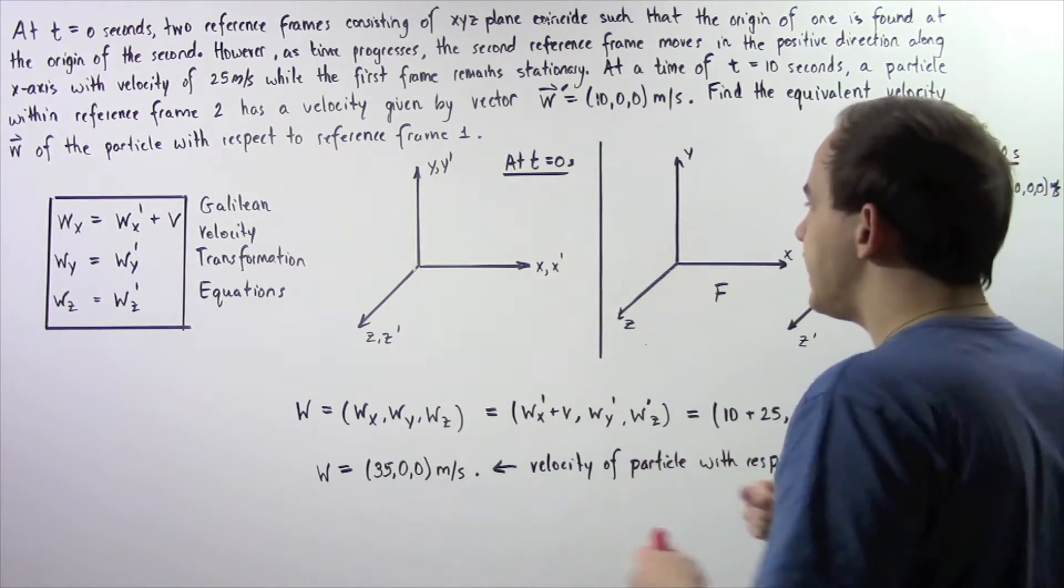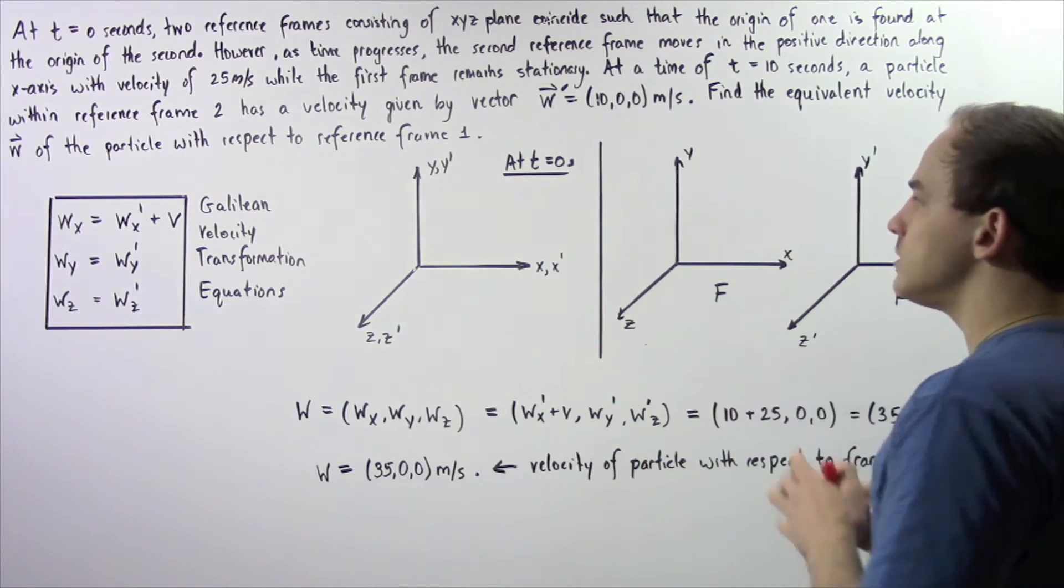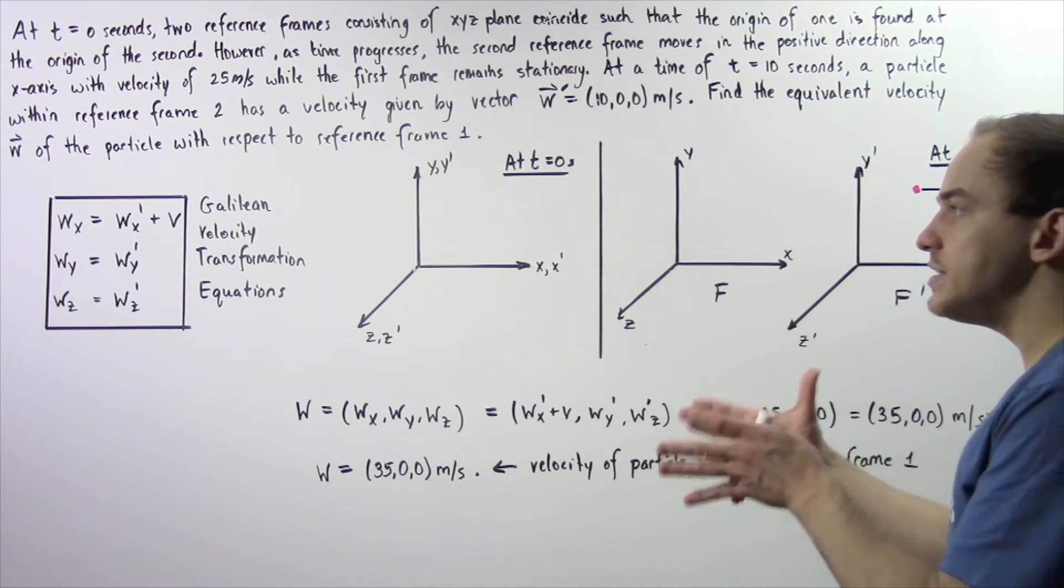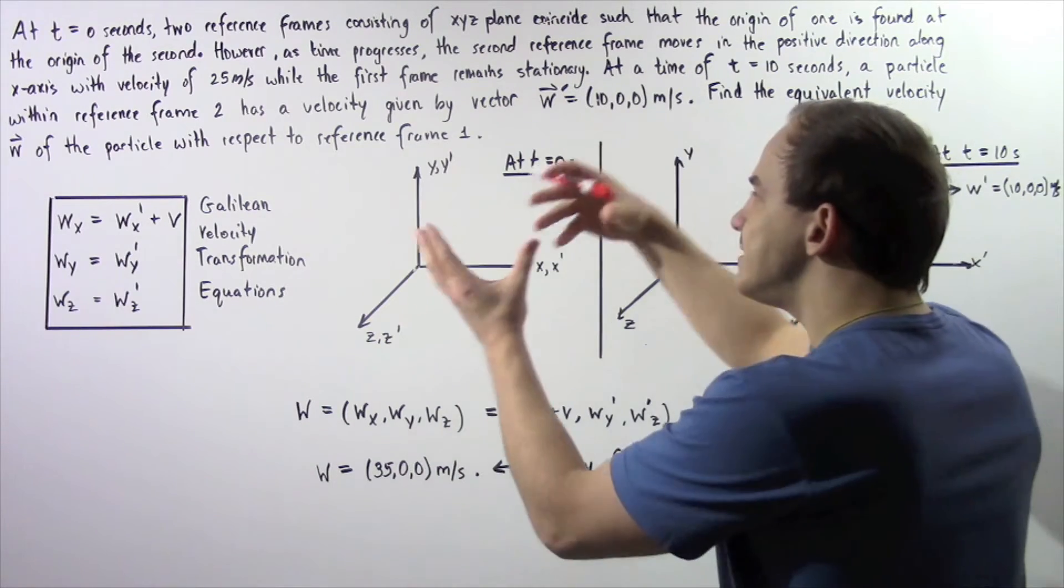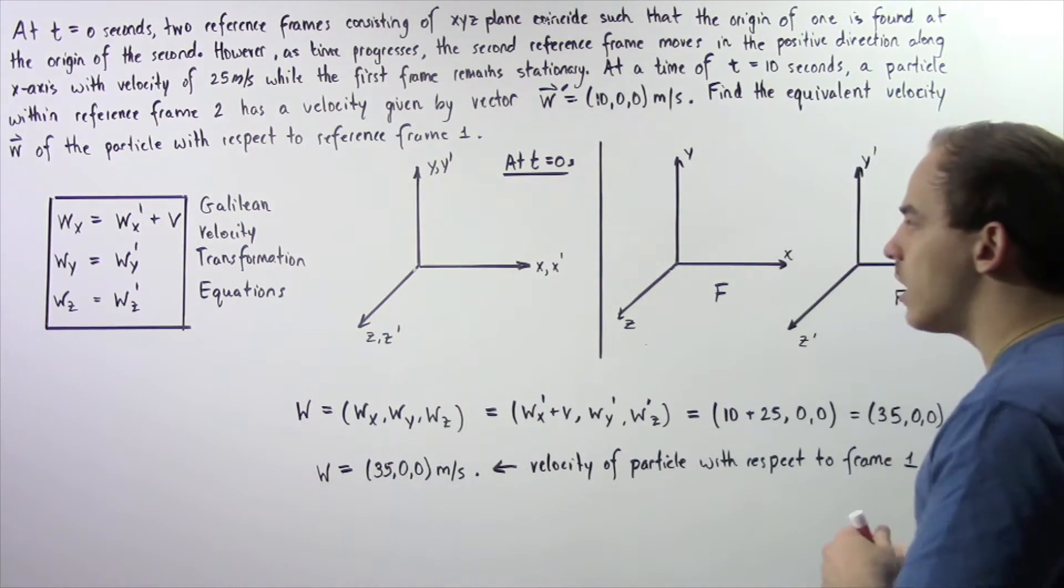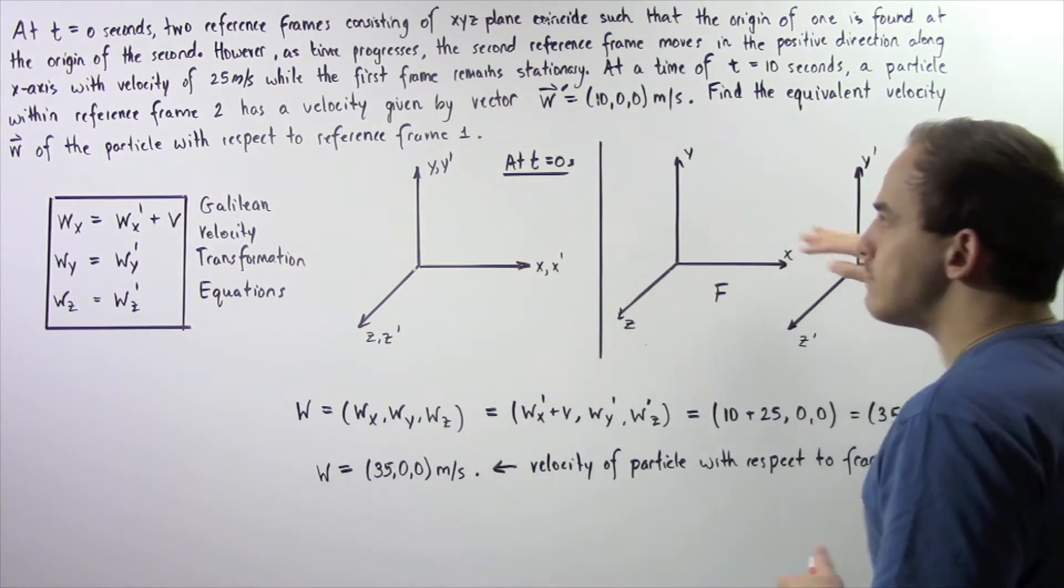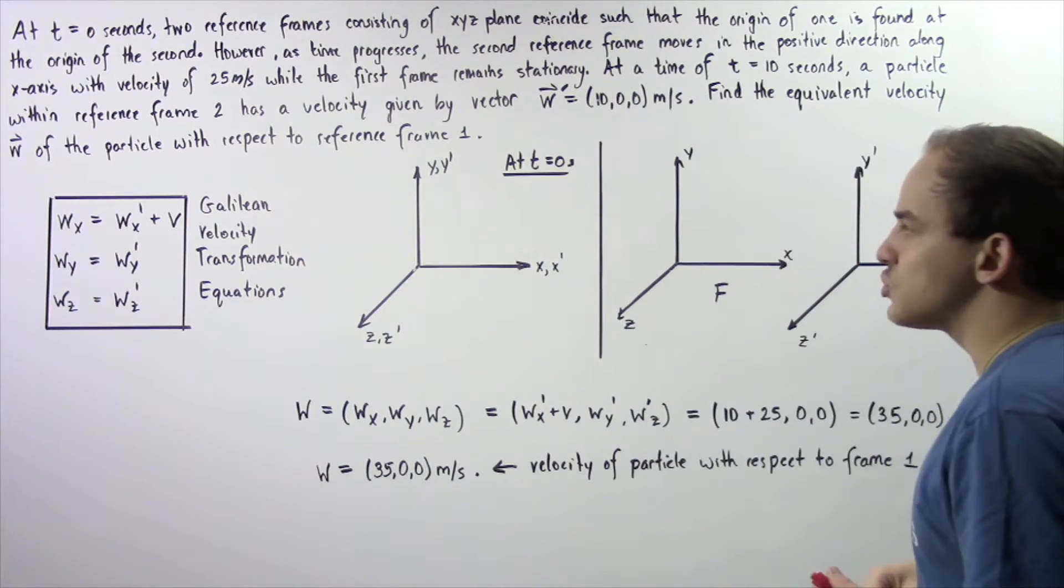So let's begin by describing what's taking place at t equals 0 seconds. So at t equals 0 seconds, these two reference frames, let's call them f and f prime, are exactly on top of one another. So x and x prime lie along the same axis, y and y prime, and z and z prime as well.